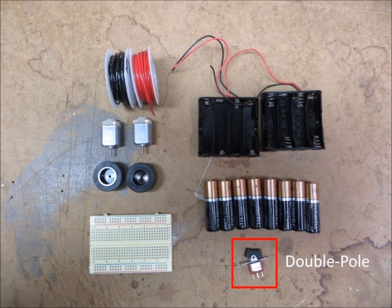The number of poles represents the number of circuits that the switch can control. When you flip the switch, both circuits would be completed so both motors will get power at the same time.